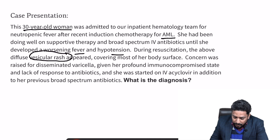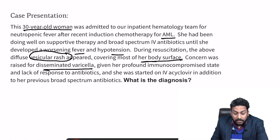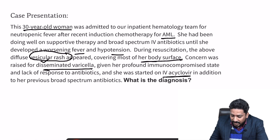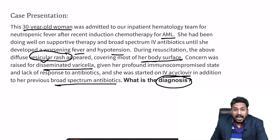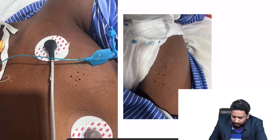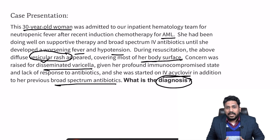Concern was raised for disseminated varicella because varicella also presents with a vesicular rash. Given her profound immunocompromised state and lack of response to antibiotics, she was started on IV acyclovir in addition to her previous broad-spectrum antibiotics. Here you can see the image — these are those vesicular eruptions, very tiny small fluid-filled lesions present over the back, trunk, and thighs.